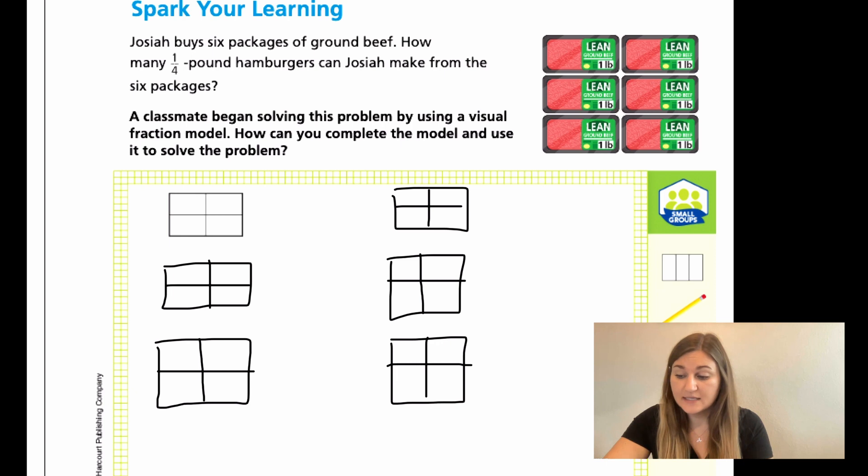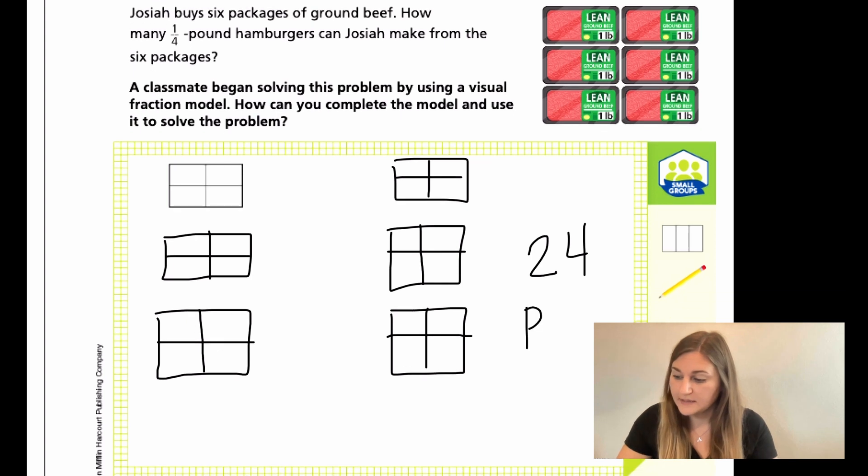And the question is asking, how many hamburgers can Josiah make from the six packages? So if each one's a fourth, how many do we have? Well, if we know each square has a fourth and we have six, four times six is 24. That's the related multiplication that we're looking for. We know that each one has four and we know that they're six, so four times six is 24. So we know that there are going to be 24 patties.